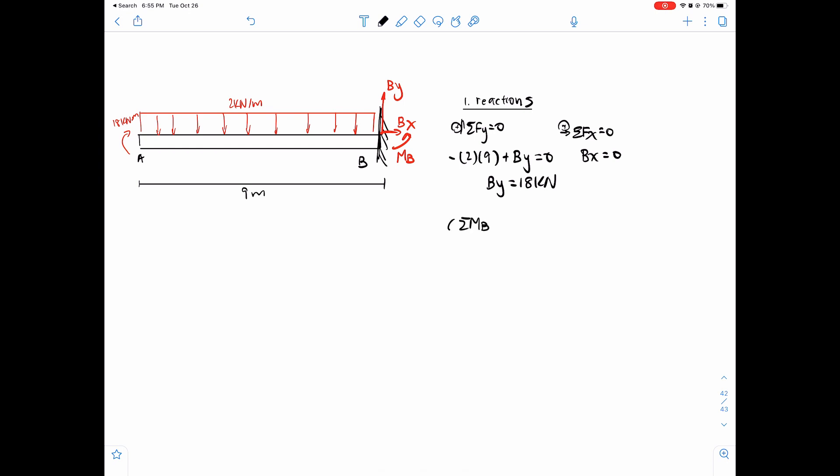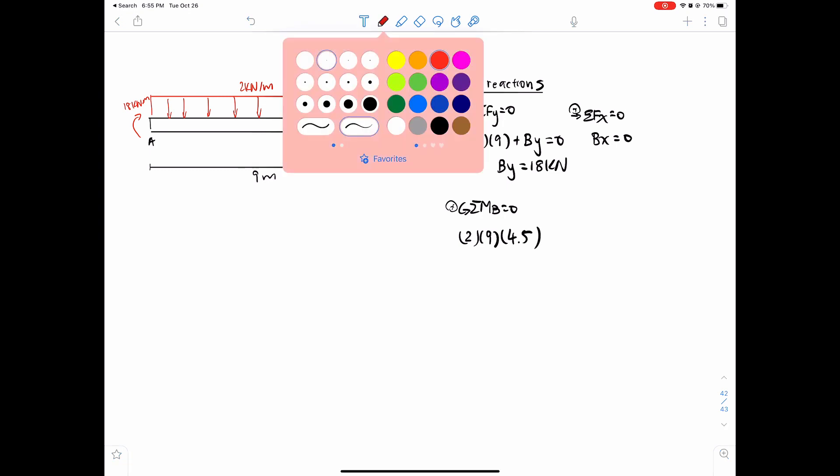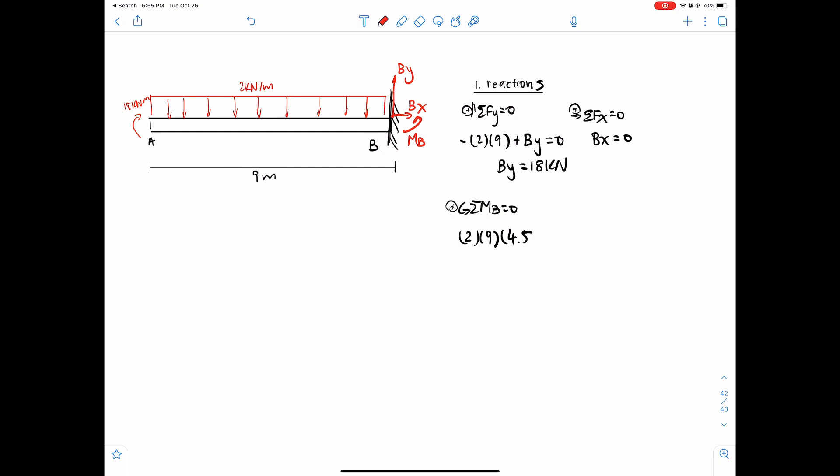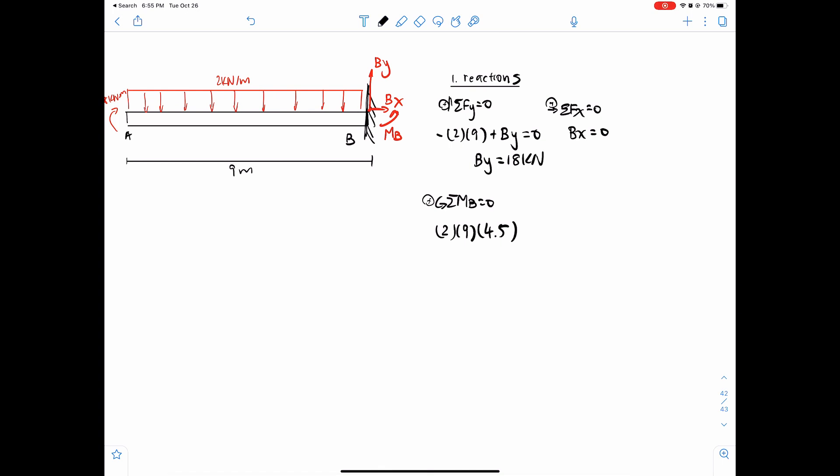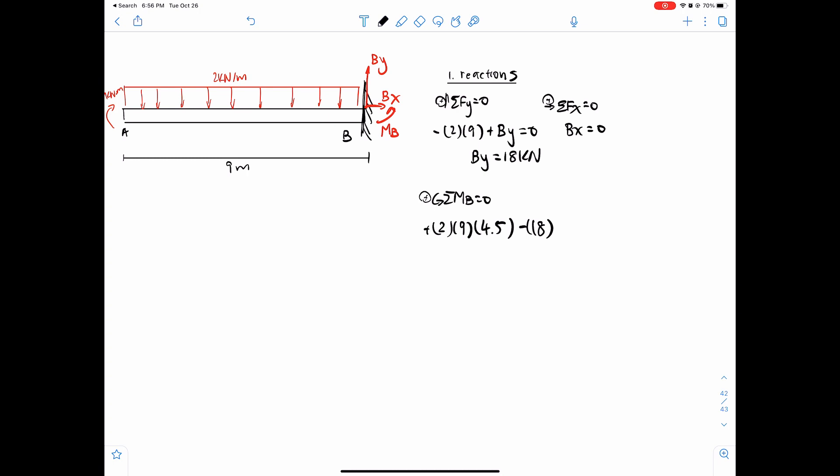So finally, sum of moments around B. How do we find this MB value? Right? So we set that equal to 0, counterclockwise equals positive. And we do 2 times 9, the distributed load, times half of 9, the distance, right? If we're replacing this with an equivalent distributed load in the middle, right, so it would be 18 and then acting at 4.5. Alright, that's how I got that number. And since this is spinning the beam counterclockwise, it's positive, right? And then don't forget this 18 here, right? Which way is the 18 spinning it? It's spinning it clockwise, so it's negative. Minus 18.